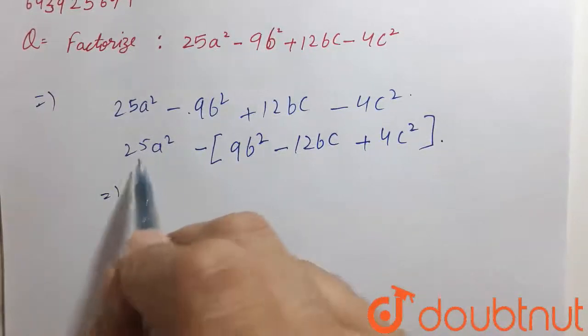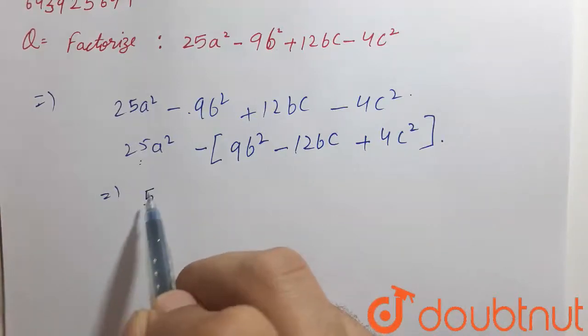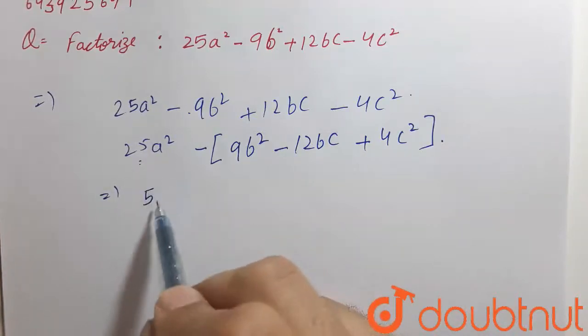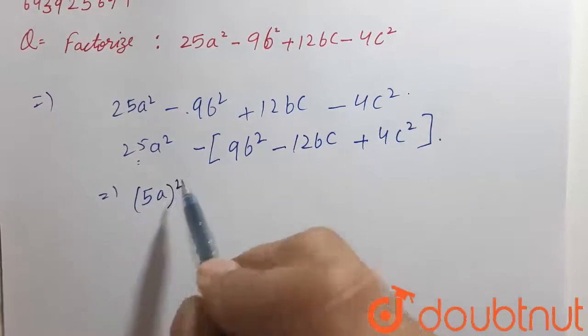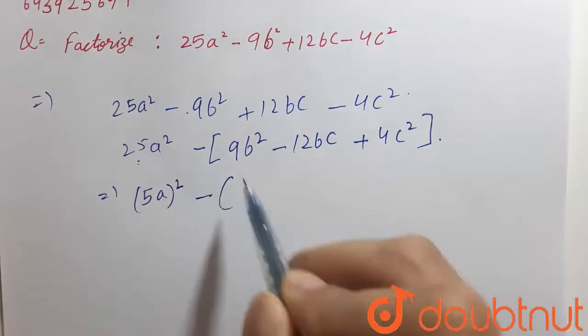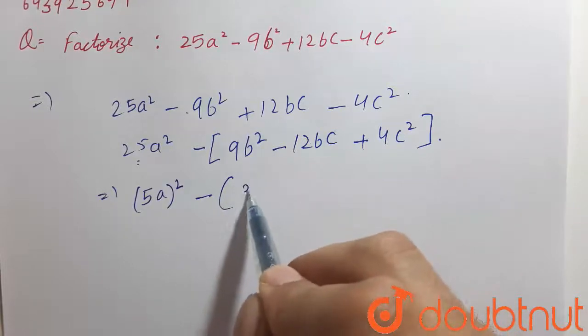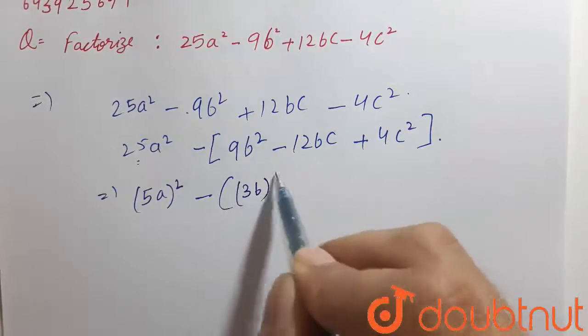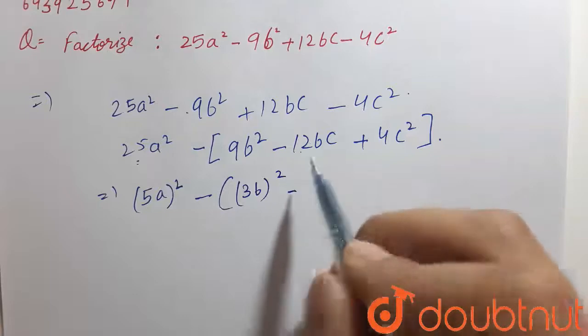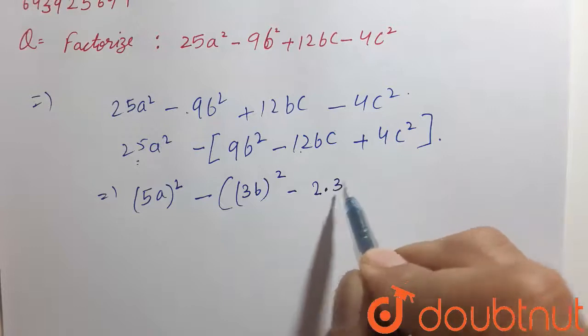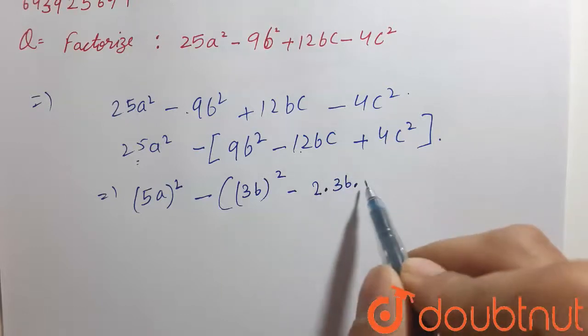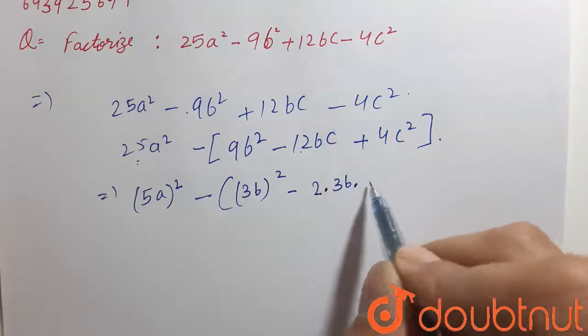It can be written as, here 5 square is 25 and a square is a square. So, it can be written as 5a whole square minus. It can be written as 3b whole square and it can be written as 2 into 3b into c, 2c.